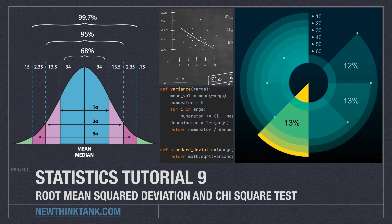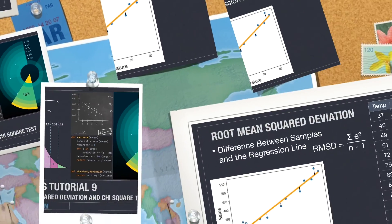Well hello internet and welcome to part nine of my statistics tutorial series. This is the final part and in this part I'm going to cover root mean square deviation as well as chi-square tests. And of course I'm going to provide code for all of the above, so let's get into it.